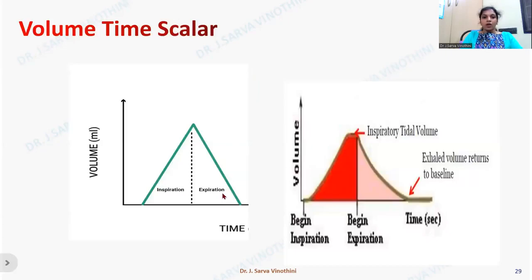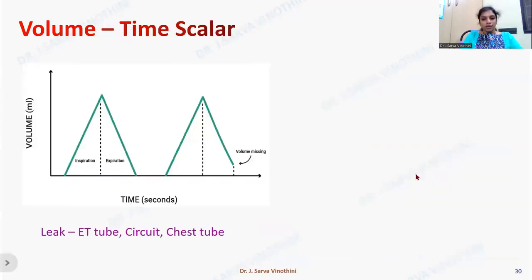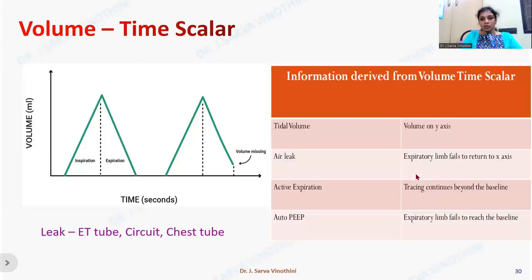Now let us look at the volume-time scalar. It helps us know the inspiration and expiration volumes. Adding an inspiratory pause produces a truncated appearance at the top. It helps determine tidal volume, and we must always check if the exhaled volume returns to baseline. If it does not return to baseline, look for possible leaks — in the endotracheal tube, the circuit, or any chest drain in place.